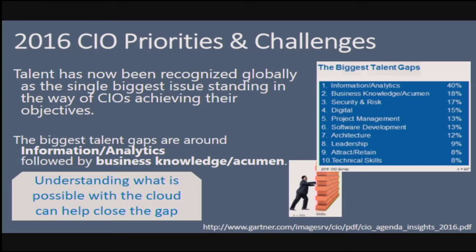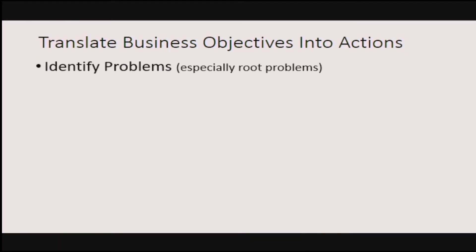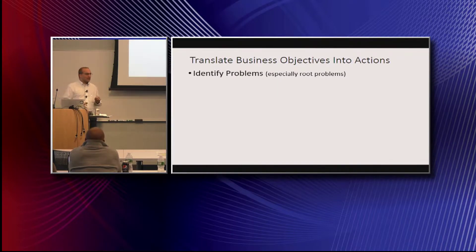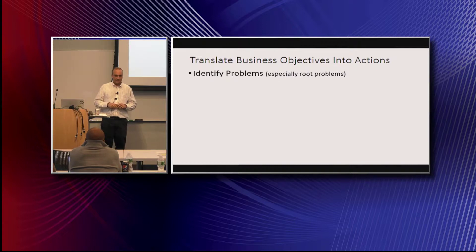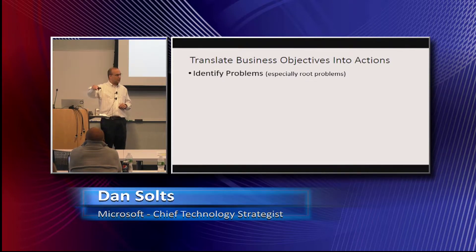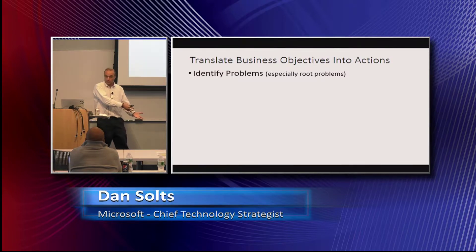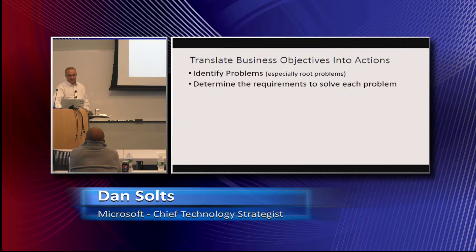Our objectives: translate business objectives into actions. First, identify the problem — that's the architect's job. This is stuff that's not on the exam but that you need as an architect to really do your job. And this is one of the hardest tasks, because what do most people do? They define a solution. They define a solution to the perceived problem — putting a band-aid on something when they never really understood the root cause.